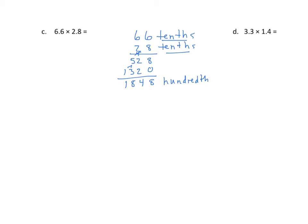Now we're going to change that hundredths to standard form. We know that there are two decimal places in hundredths, so it would be 18 and 48 hundredths. I want to take a look at a connection we want to make here. We notice that the first factor has one decimal place, the second factor has one decimal place. Therefore, the product is going to have two decimal places. So we count two decimal places, and we have 18 and 48 hundredths.